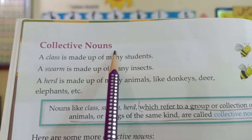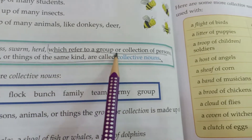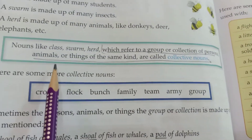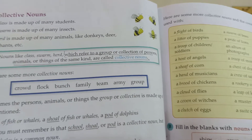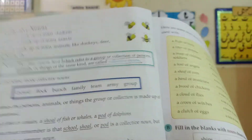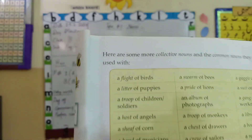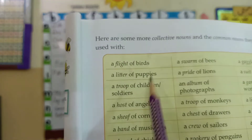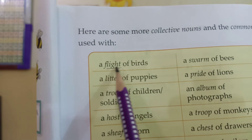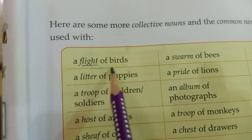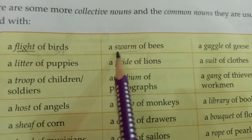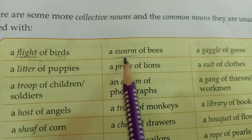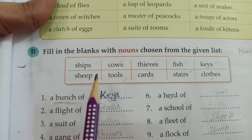Collective noun — what is a collective noun? A collection which refers to a group or collection of persons, animals, or things of the same kind are called collective nouns. You can say it is a collection and group of the same kind. For example: a flight of birds — the word 'flight' refers that there is a group of birds. A swarm of bees — the word 'swarm' shows a group of bees. There are many examples for you and there is an exercise of collective nouns.